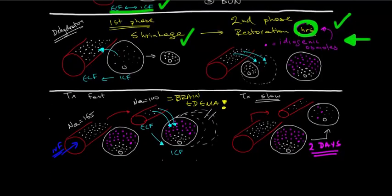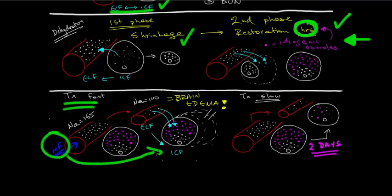That takes a few hours. If you treat fast, we're effectively putting IV fluids into the intracellular fluid and then we're causing brain edema. We don't want that to happen. We need to treat slowly, at least over a period of two days, so that we give the cell, the brain cell, a chance to consume those idiogenic osmoles so it doesn't swell up.